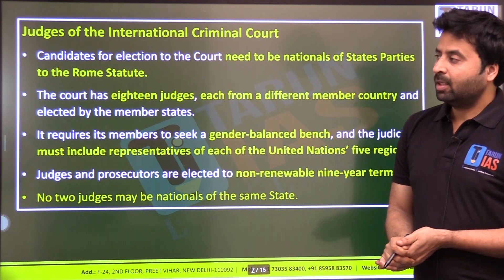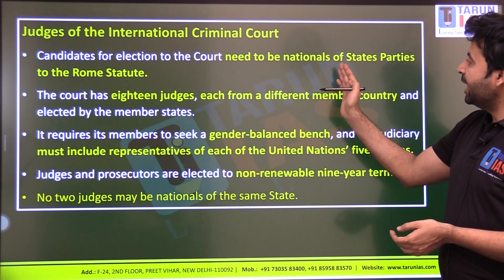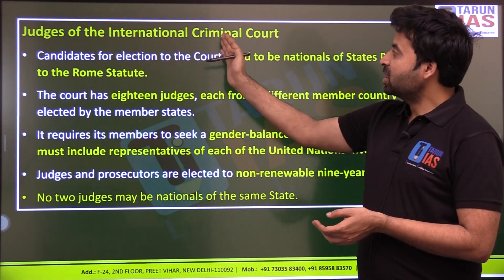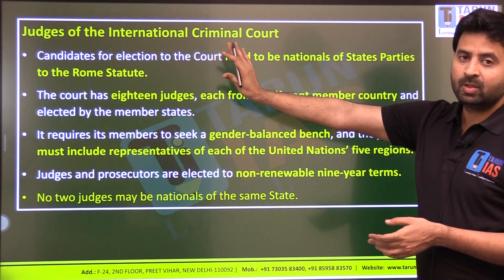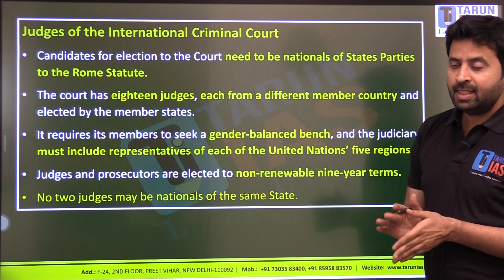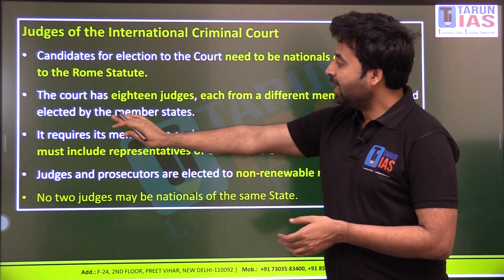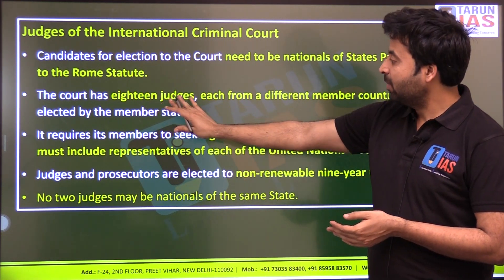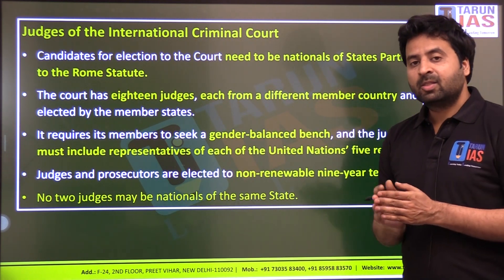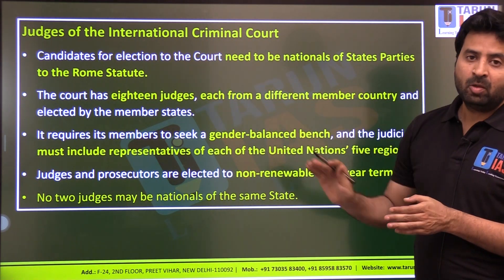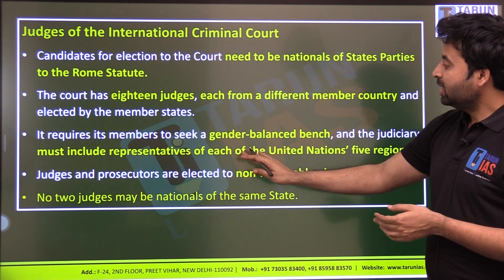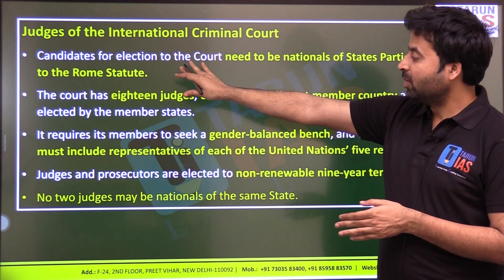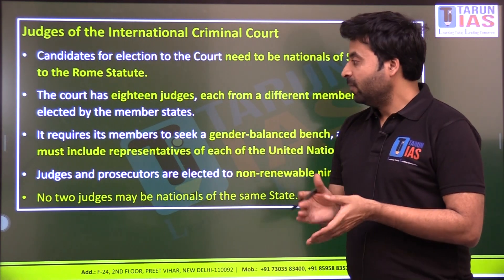Regarding judges of the International Criminal Court: candidates for election must be nationals of state parties to the Rome Statute. The court has 18 judges, each from a different member country, elected by the member states. The court requires its members to seek a gender-balanced bench, ensuring adequate representation of women judges. The judiciary must also include representatives from each of the United Nations' five regions.